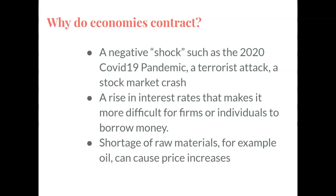As we've seen a vaccine starting to be on the horizon, the stock market starts to grow again and we enter a period of expansion. A rise in interest rates is something else that makes it more difficult for firms or individuals to borrow money. This might lead to a period of economic contraction because firms need to borrow money to invest in capital goods, and individuals need to borrow money to buy a home. A shortage of raw materials — for example, oil in the past — has caused overall price increases and can lead to economic contraction.